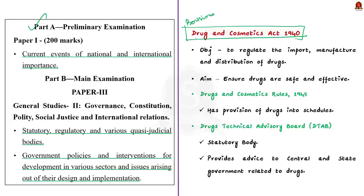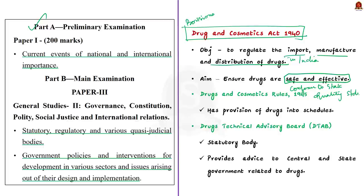The Drugs and Cosmetics Act 1940 was mainly enacted to regulate the import, manufacture and distribution of drugs in India. The act aims to ensure that the drugs and cosmetics sold in India are safe, effective and conform to state quality standards. We must also know about the Drugs and Cosmetics Rules 1945, which are the set of rules under the act. These rules provide the provision for the classification of various drugs into different schedules.